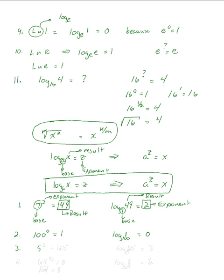Let's do 5 cubed equals 125. Write down log; the base is 5, the exponent 3 goes over on the right side of the equals, and the result 125 goes inside the log. So: log base 5 of 125 equals 3.